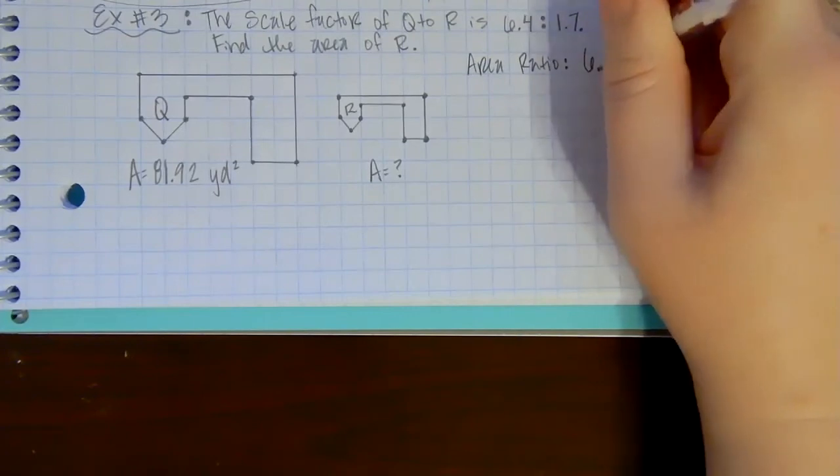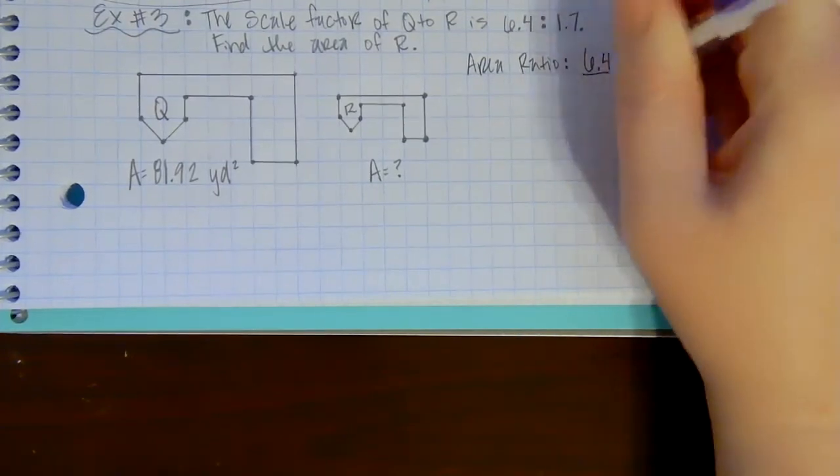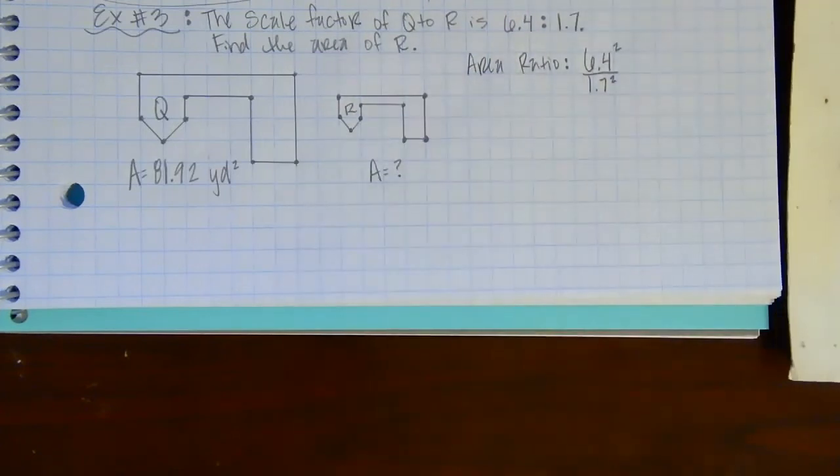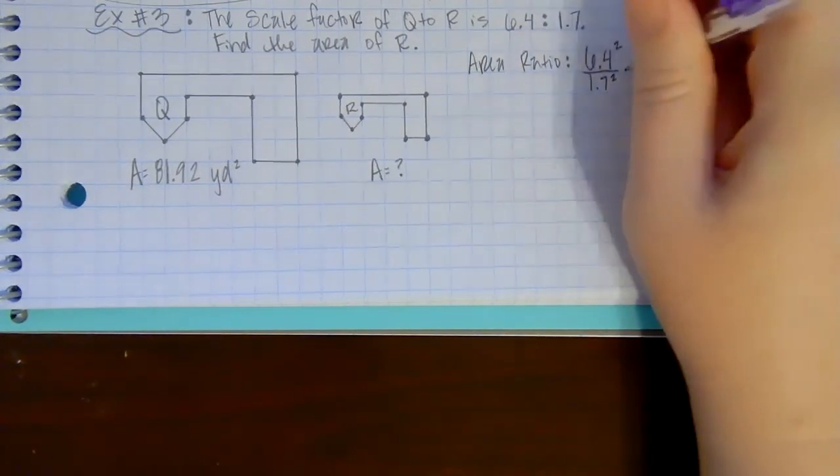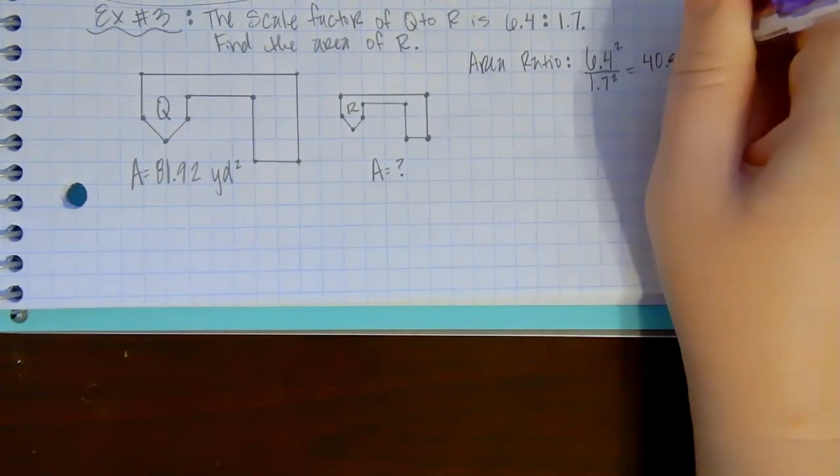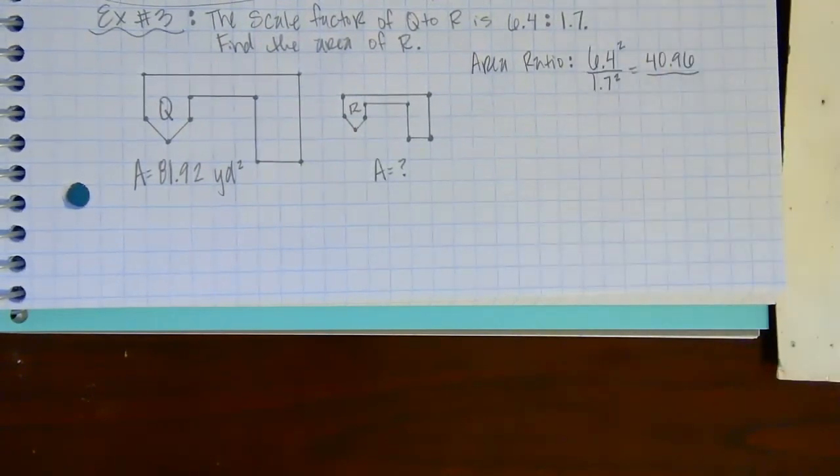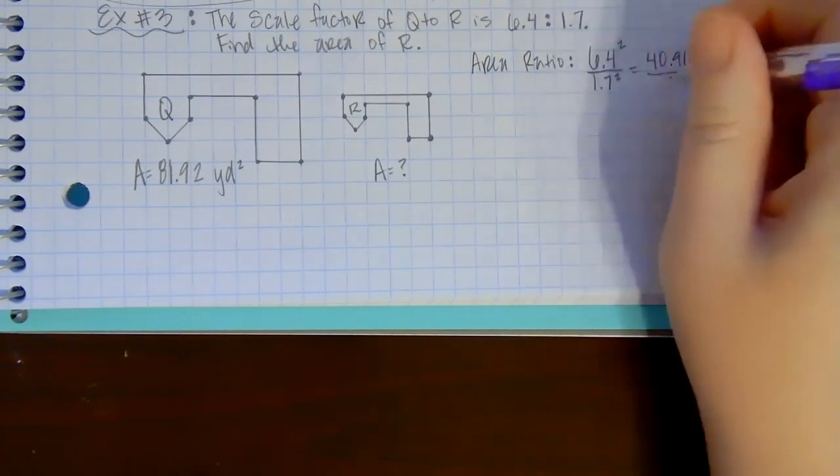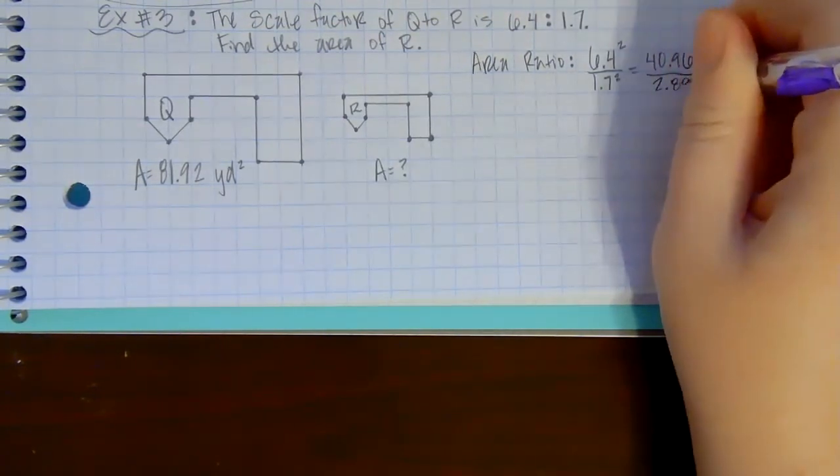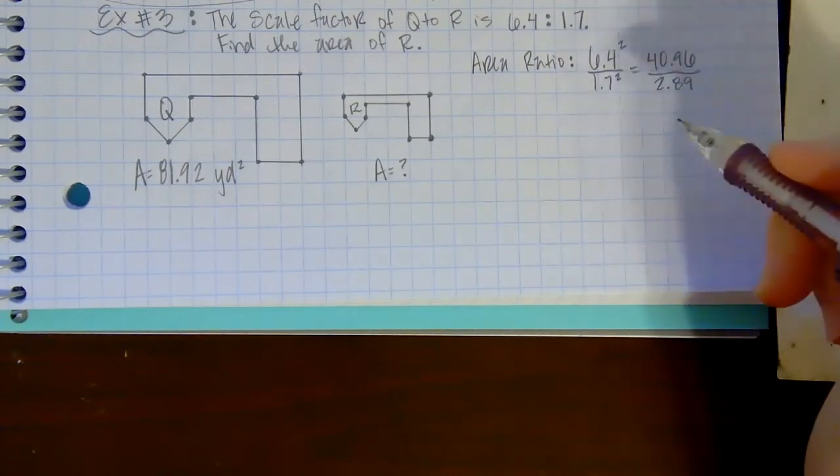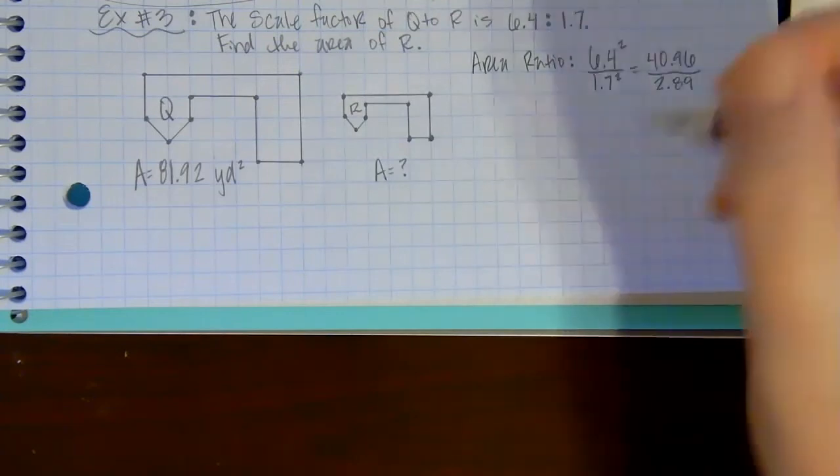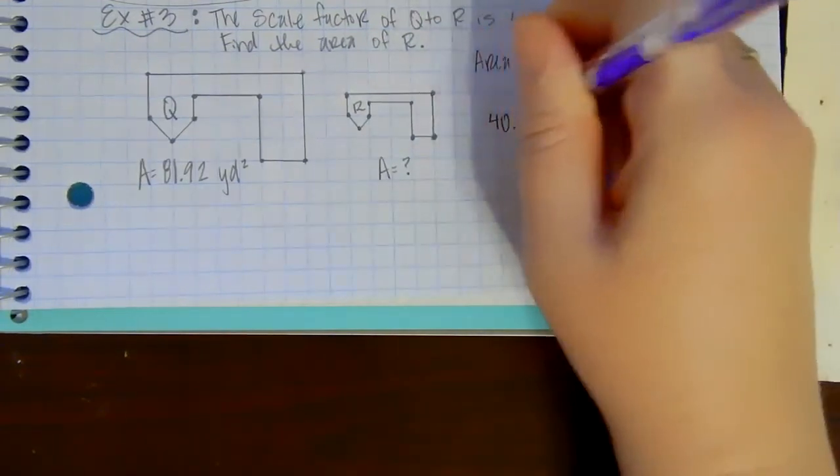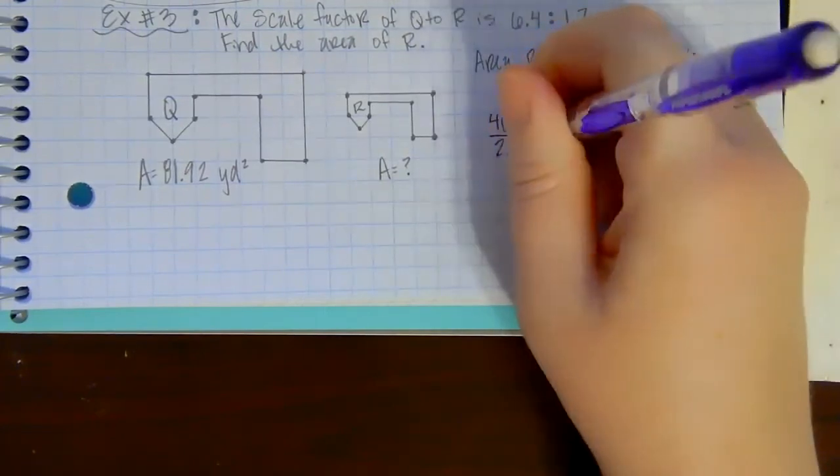So I'm going to write this as a fraction, so it makes it a little bit easier. I'm going to do 6.4 squared over 1.7 squared. So 6.4 squared in my calculator gives me 40.96, and then 1.7 squared in my calculator gives me 2.89. I have to find the area ratio if I want to find the areas, it has to be the same.